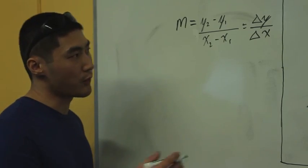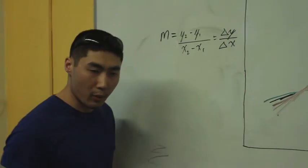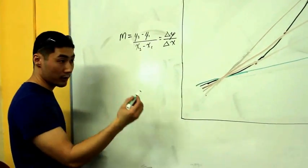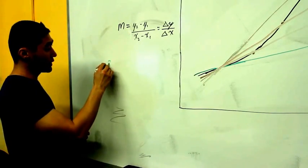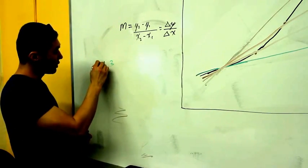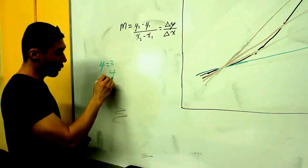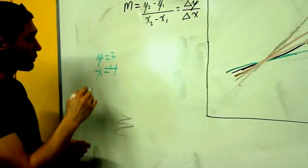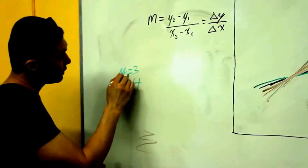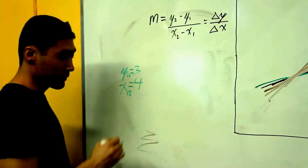So why can't we just choose variables that are exactly on that point? Well, if I were to say that this point of y is 3 and our x is, say, 4, and they're both the same, so y1 and y2 is the same, and x1 and x2 is the same.